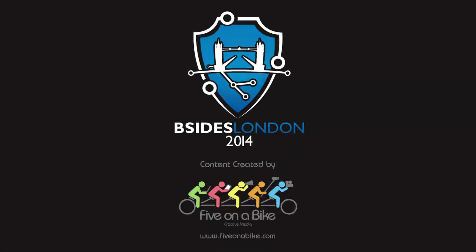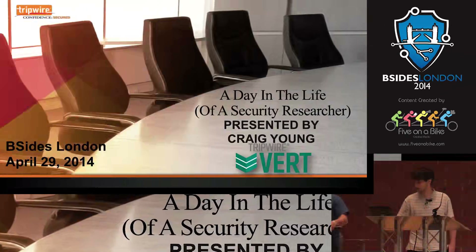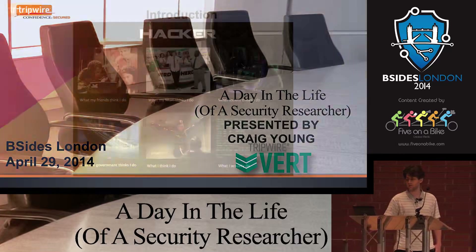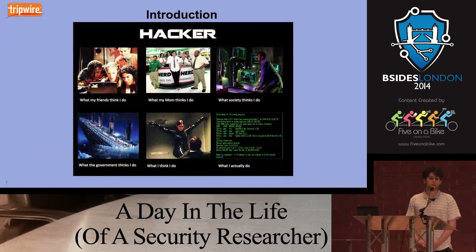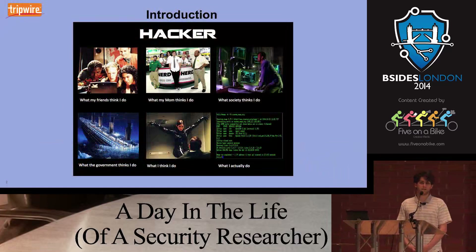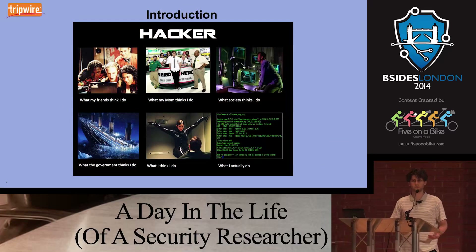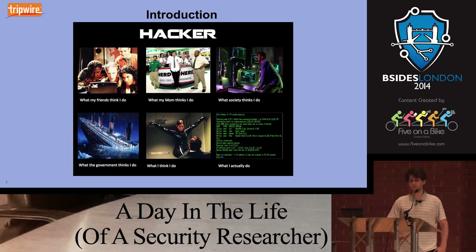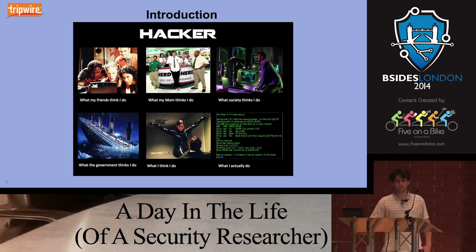Thanks to everybody for organizing B-Sides London. I'm glad to be here to talk to you. I'm going to be talking about what I do as a security researcher for Tripwire VRT. This talk is primarily focused around the ideas of being able to do security-focused quality assurance testing. If you haven't had any exposure to pen testing before and you have a product that you need to start finding vulnerabilities in, this is going to give you all the tools that you need. If you are a pen tester already, it might teach you something you don't know. More or less, it's approaches to manual fuzz testing to find vulnerabilities.